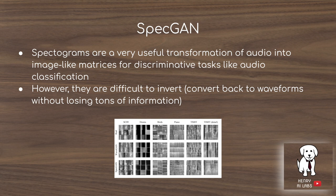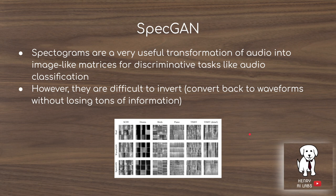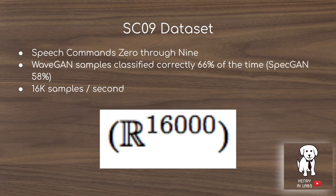SpecGAN uses spectrograms, which are Fourier transform-based representations in the time-frequency domain. They look like images and are useful for audio and speech classification tasks. However, they are difficult to invert — converting a spectrogram back to a waveform loses a lot of information. The paper does present a technique for going from spectrograms back to waveforms.